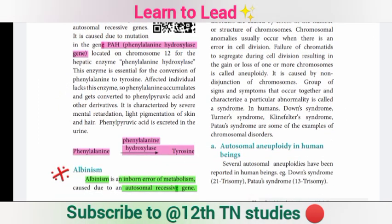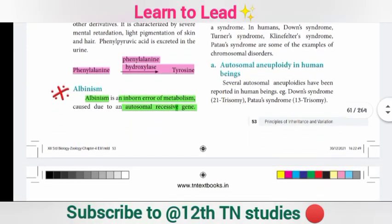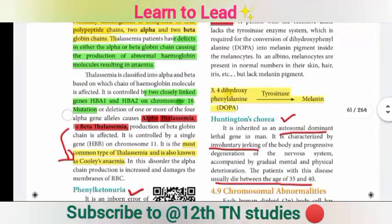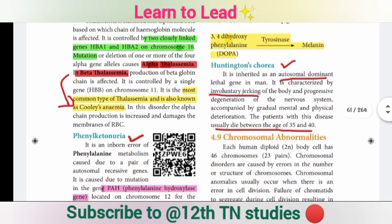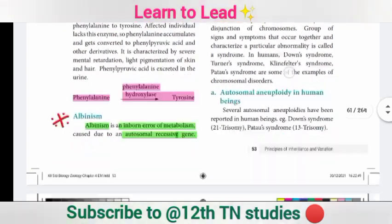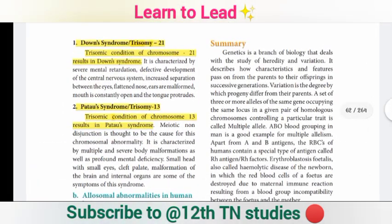You can read about albinism. Next, Down Syndrome, also called Trisomy 21 — these are two important topics. The cause is a trisomy condition of chromosome 21, which leads to Down Syndrome. That is the first important line to remember.